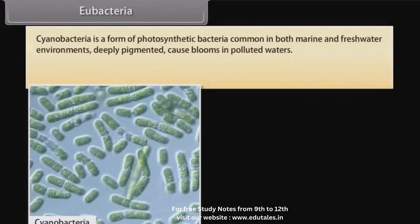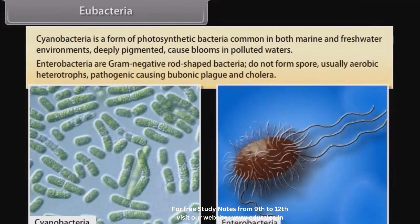Cyanobacteria are a form of photosynthetic bacteria common in both marine and freshwater environments, deeply pigmented, and cause blooms in polluted waters. Enterobacteria are gram-negative rod-shaped bacteria that do not form spores, are usually aerobic heterotrophs, and are pathogenic, causing bubonic plague and cholera.